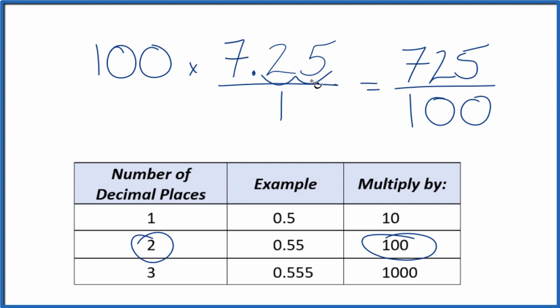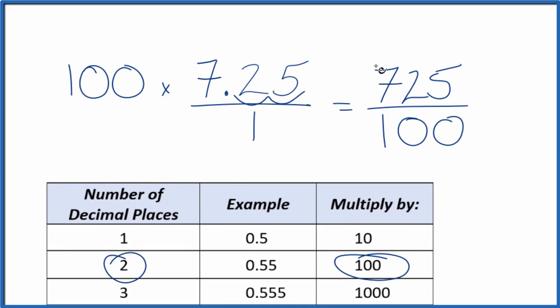The decimal 7.25 equals the fraction 725 over 100. We can actually put this in lower terms, so let's simplify it.